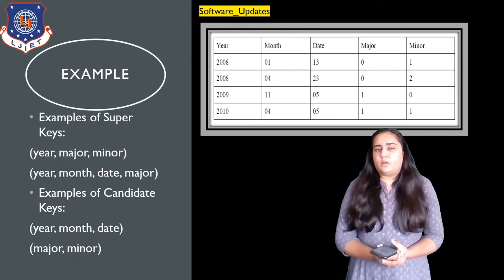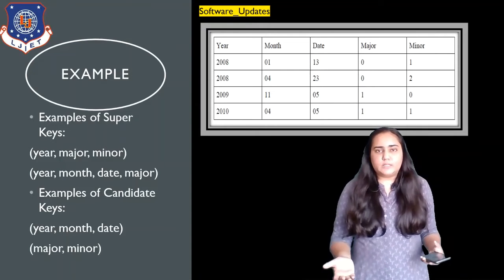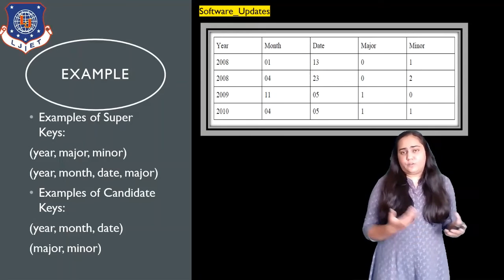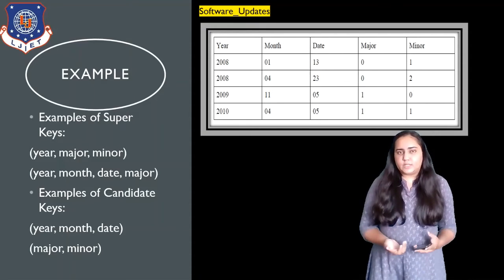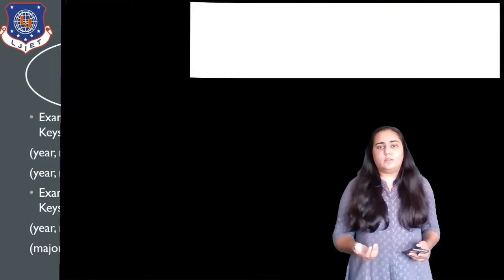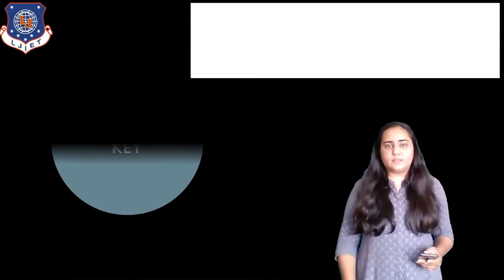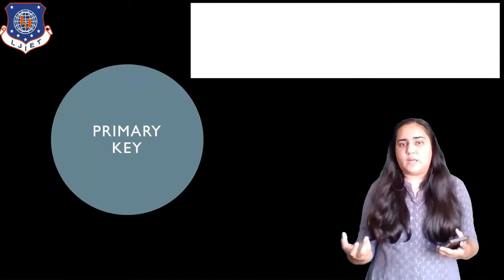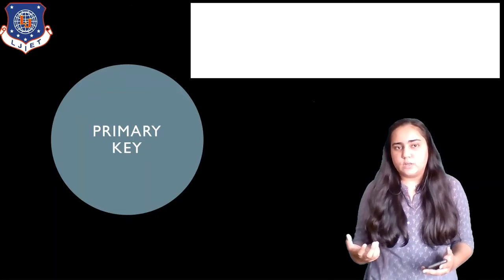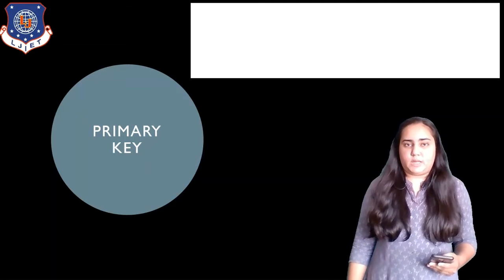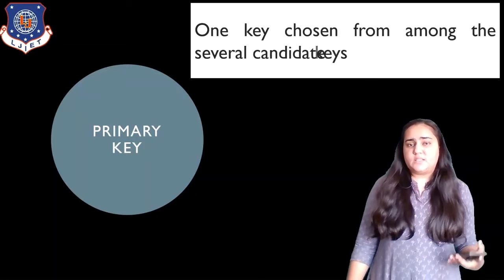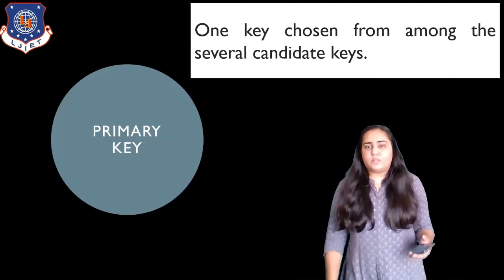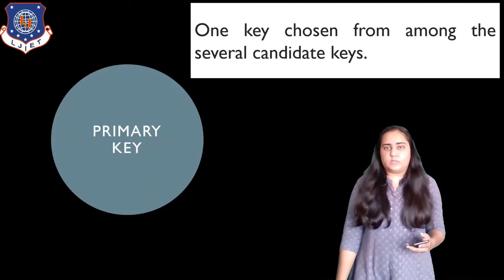There can be many super keys, and from those you can create many minimal super keys, which are candidate keys. From among those candidate keys, we select one key that we actually want to use, and that is known as the primary key. The primary key is one key chosen from among the several candidate keys that are available.